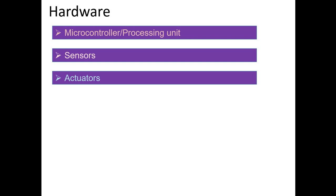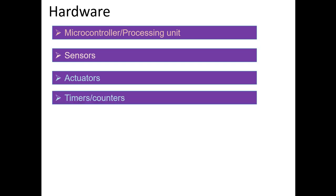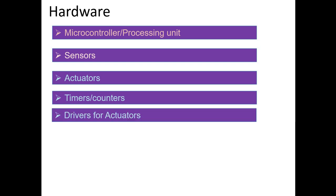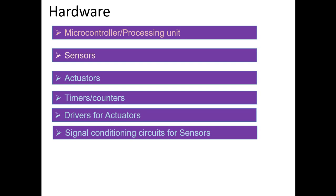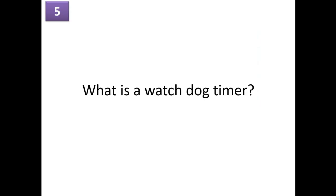Actuators could be a heater or a fan and so on. The system will also have timers and counters, drivers for actuators, and signal conditioning for sensors. These are the set of hardware components for embedded systems.